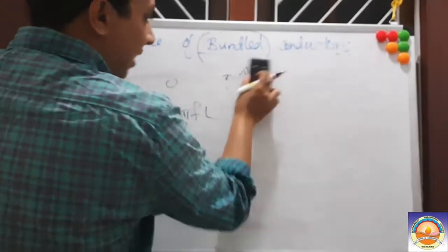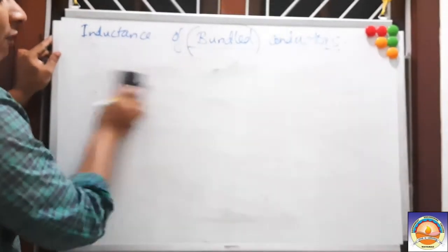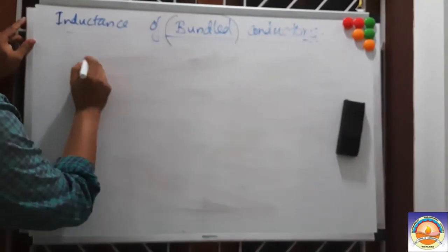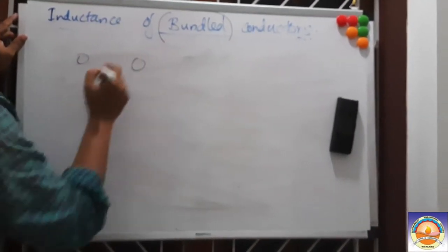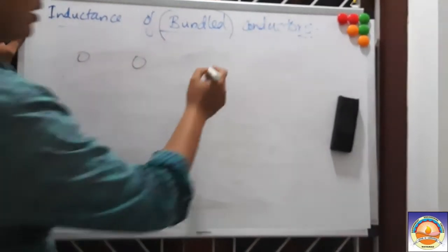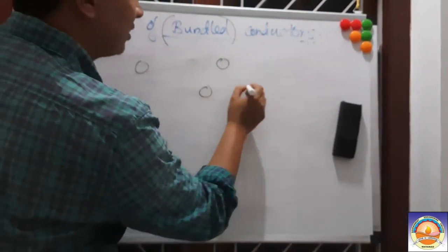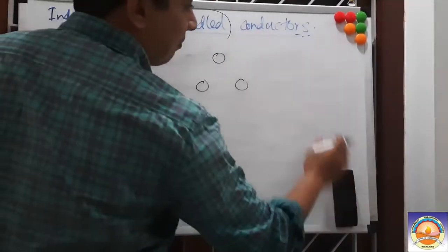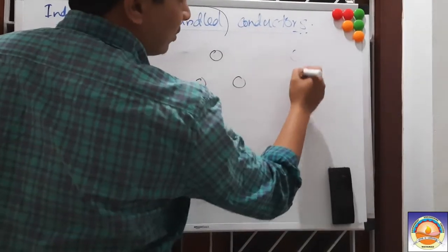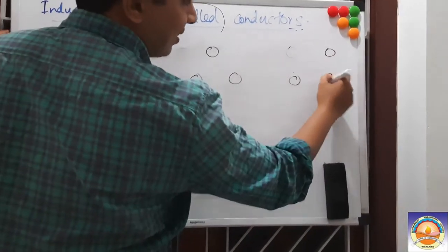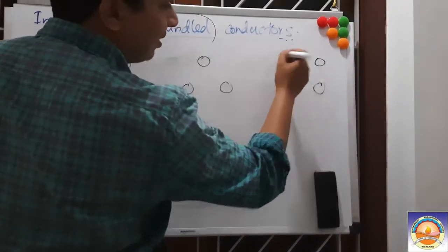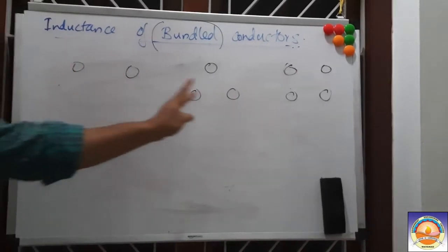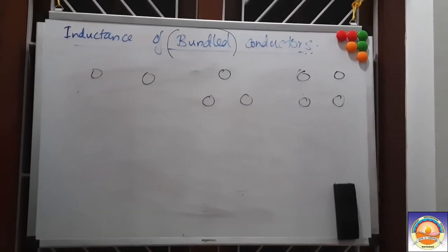Bundle conductors can take different configurations — two, three, or four conductors per phase. For a three-phase system, each phase will have its bundle. To find the inductance of a bundle conductor, we follow the same approach used for composite conductors. The self-GMD (DS_bundle) of the bundle needs to be calculated based on the number of sub-conductors and their spacing.